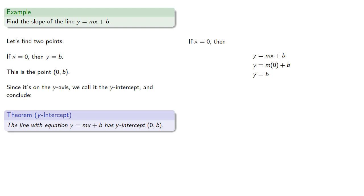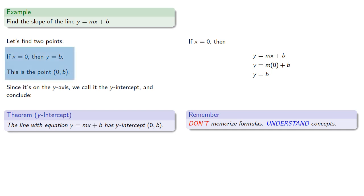It's important to remember that the intercept is a point, and so we should always specify its coordinates as an ordered pair 0, b. But far more importantly, remember, don't memorize formulas, understand concepts. The reason we know where the y-intercept is, is we found it by letting x equal 0.